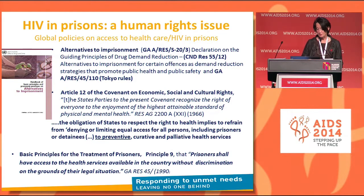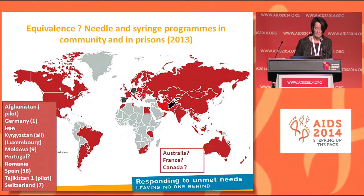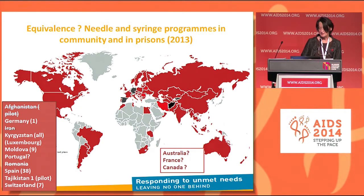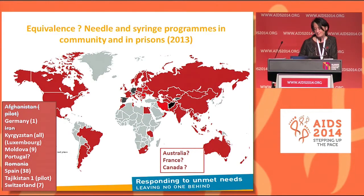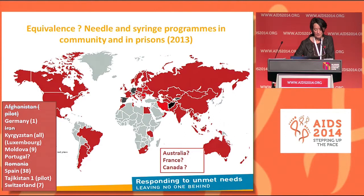There are also the basic principles for the treatment of prisoners, and many other international instruments supporting access of people in prisons to services equivalent to those accessible in the community. But what is the reality? This map — adapted from the Harm Reduction International Report on the Status of Harm Reduction in the World — shows in red the countries with needle and syringe programs in the community, and in black the countries with needle and syringe programs in both the community and prisons. While there is quite good community coverage, in prisons it is very limited.